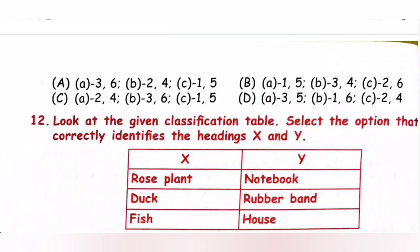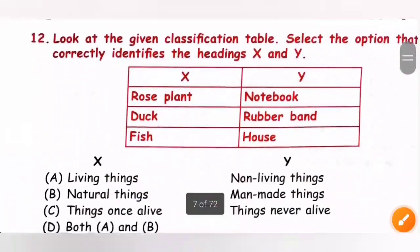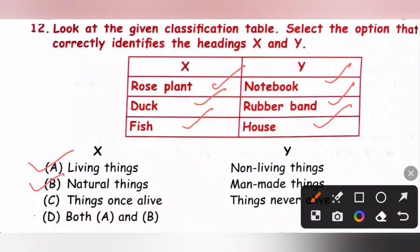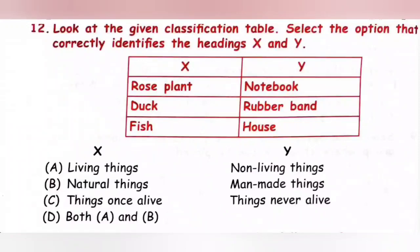Question 12: Look at the given classification table. Select the option that correctly identifies headings X and Y. Under X: rose plant, duck and fish — these are natural living things. Under Y: notebook, rubber band and house — these are man-made non-living things. Both options A and B are correct: X can be called living things as well as natural things; Y can be called non-living things as well as man-made things. Option D is the correct answer.